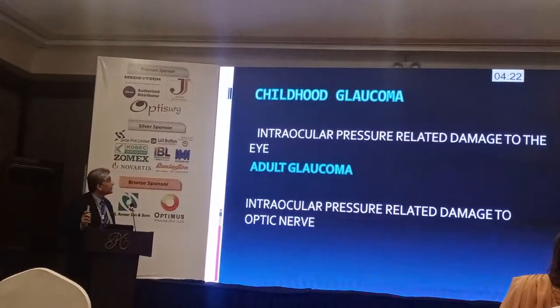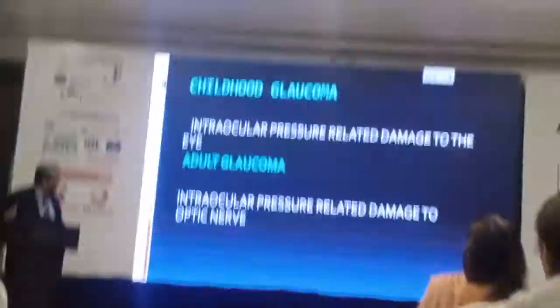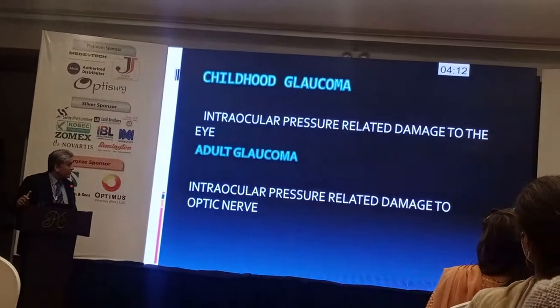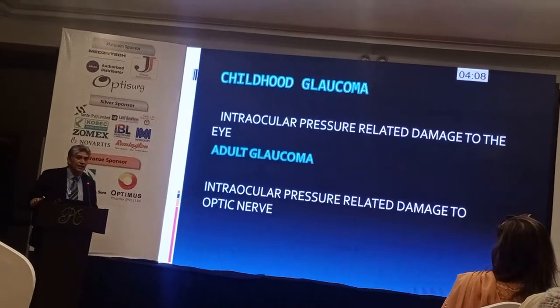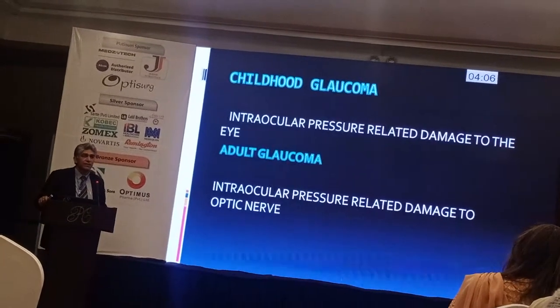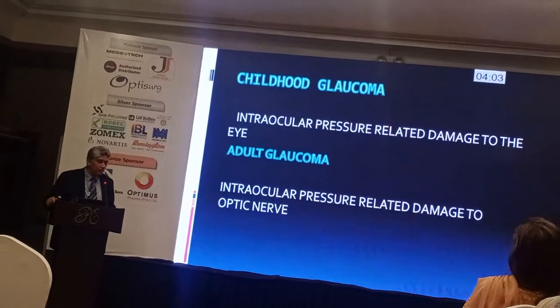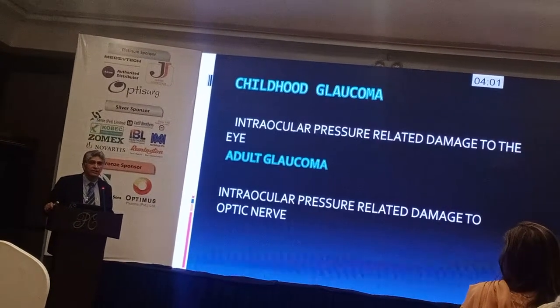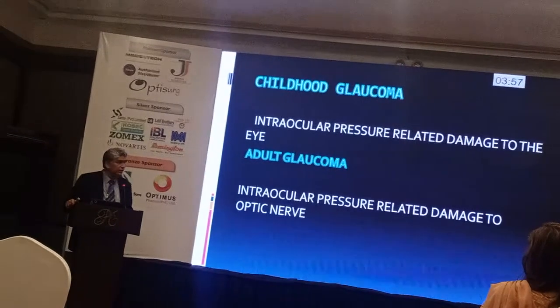So how does childhood or pediatric glaucoma differ from adult glaucoma? In adult glaucoma, raised intraocular pressure causes damage to the optic nerve. The end organ being damaged is the optic nerve, and all the problems associated with adult glaucoma are due to damage to the optic nerve.